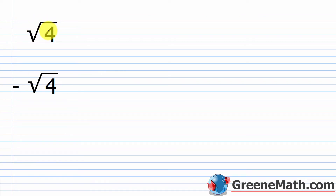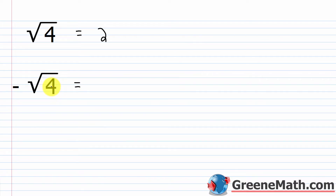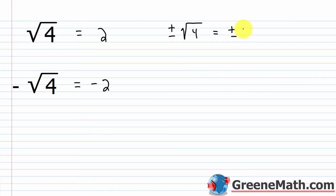Let's look at a quick example. The principal square root of 4 asks for what positive number, when multiplied by itself, gives me 4. We all know that's 2, since 2 times 2 is 4. For the negative square root of 4, we ask what negative number, when multiplied by itself, gives me 4 — and that's negative 2. Using compact notation: ±√4 = ±2.